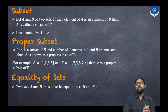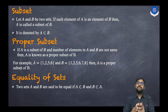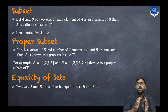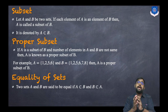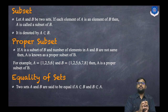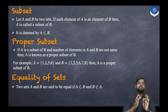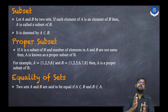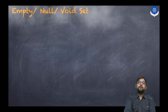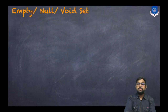Now, what is equality of sets? Two sets A and B are said to be equal if A ⊆ B as well as B ⊆ A — that is, both sets are subsets of each other. Then we can say both sets are the same.